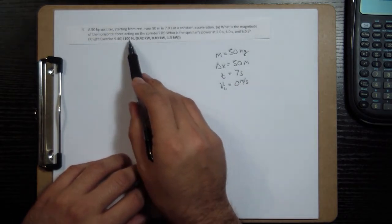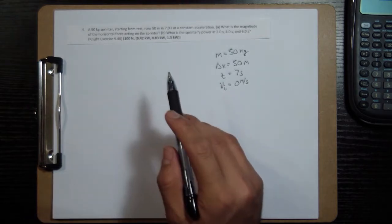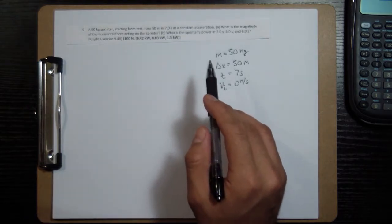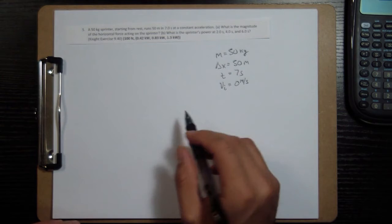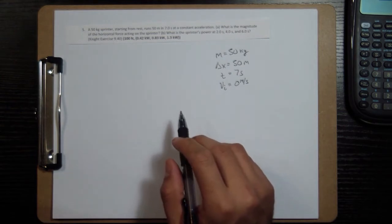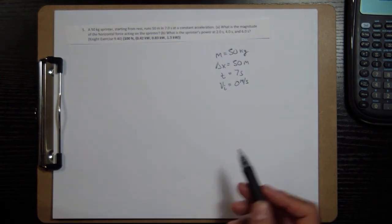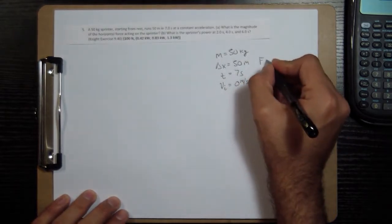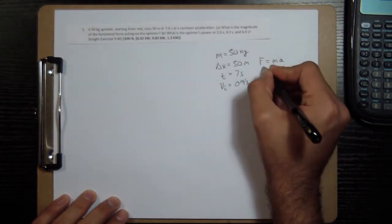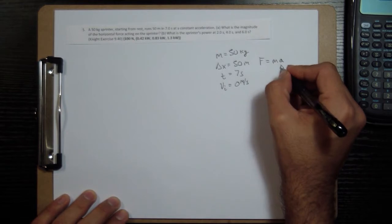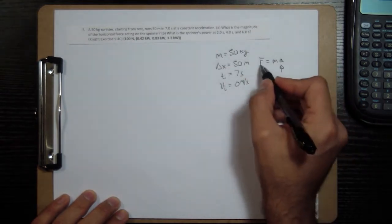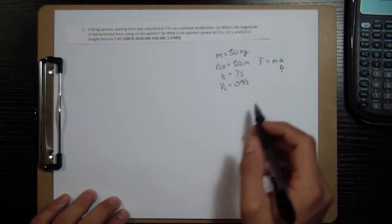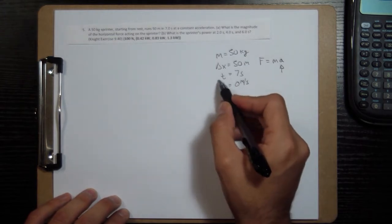We want to know the magnitude of the horizontal force acting on him. And so what we can do is we can use one of the equations that gives us the acceleration, because if we want to know the force, force is related to kinematics via F equals mA. If we find the acceleration, we already know the mass, we can figure out the force that we need. So to find the acceleration, we look at kinematic quantities. We're looking for acceleration.